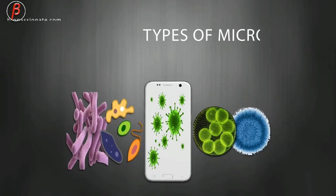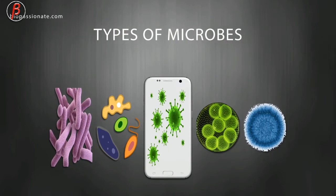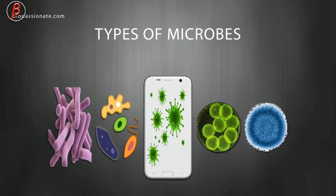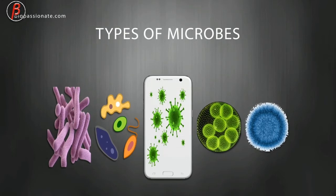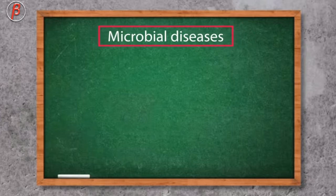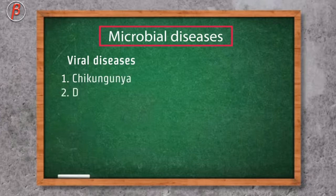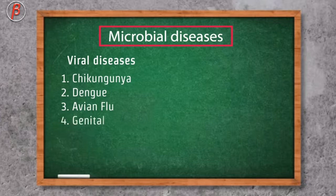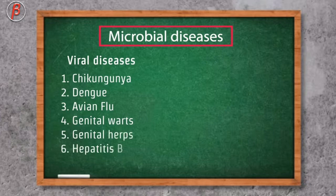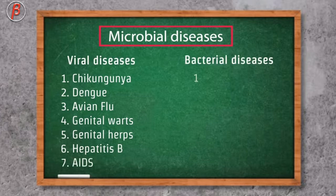Microorganisms are of many types like bacteria, protozoans, viruses, algae and fungi. Diseases which are caused by viruses are commonly called viral diseases, like chikungunya, dengue, avian flu, hepatitis B, and AIDS. Some diseases which are caused by bacteria are syphilis and gonorrhea.